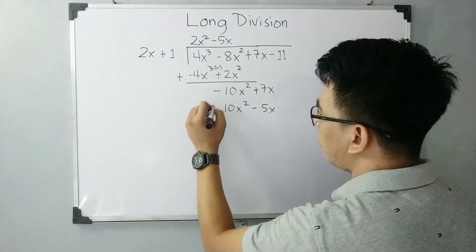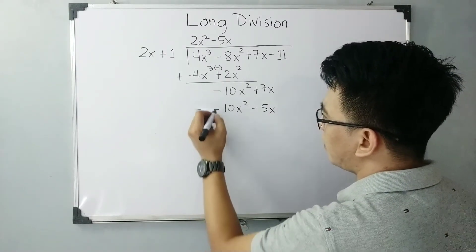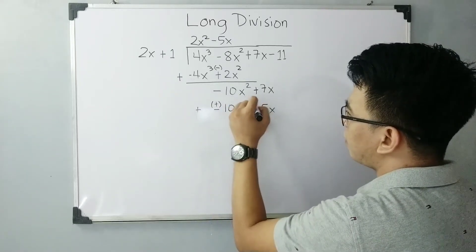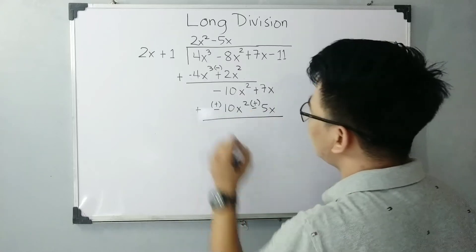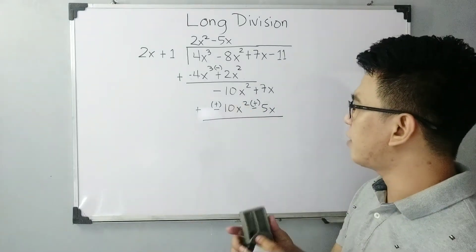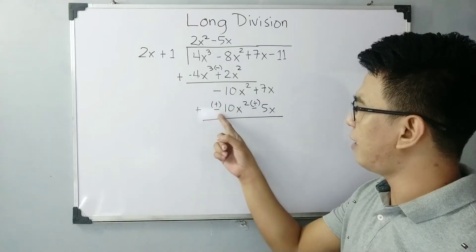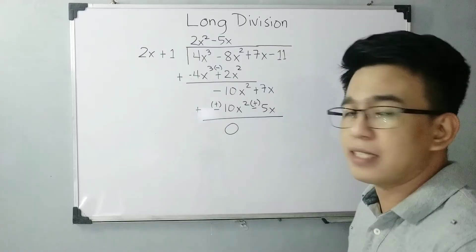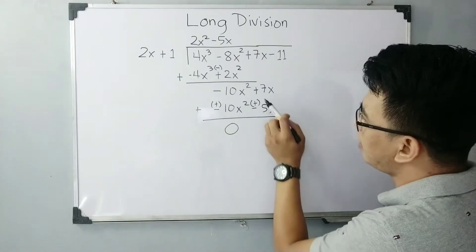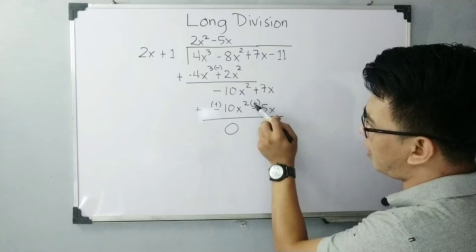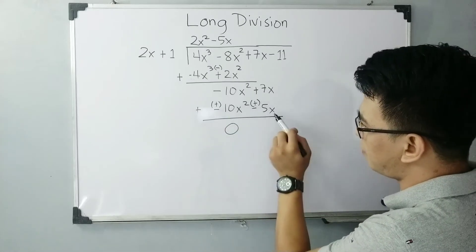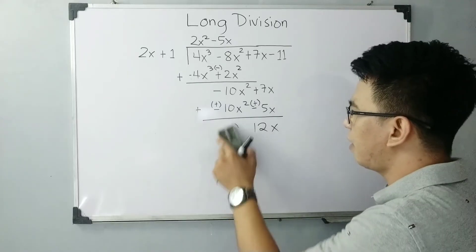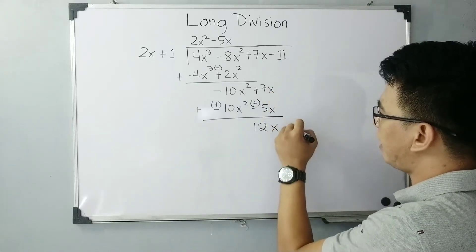Same process — we need to subtract this. Of course, the signs will change: it becomes positive. So negative 10x squared plus positive 10x squared is 0. And then 7x positive plus positive 5x gives plus 12x. Then bring down minus 11.